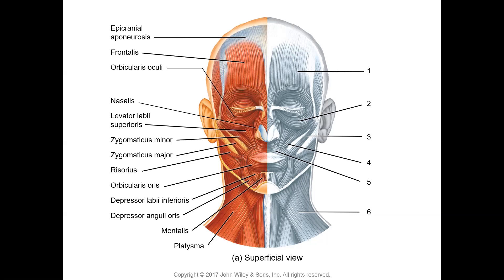Number two is orbicularis oculi; number three is zygomaticus major; number four is zygomaticus minor; number five is orbicularis oris — a circular muscle around the mouth; and number six is the platysma. Spend time contracting these muscles on your own body. The platysma is superficial, and the sternocleidomastoid muscle runs under it, going diagonally from the sternum and clavicle to the mastoid process of the temporal bone.